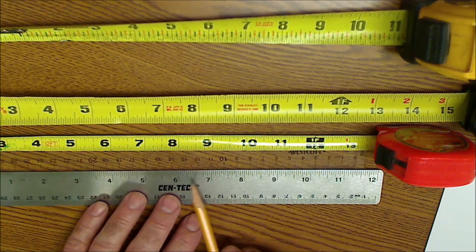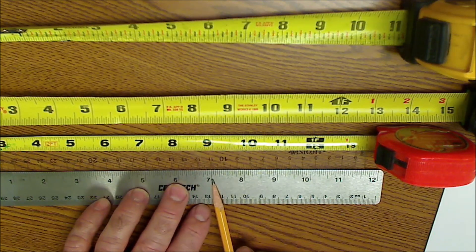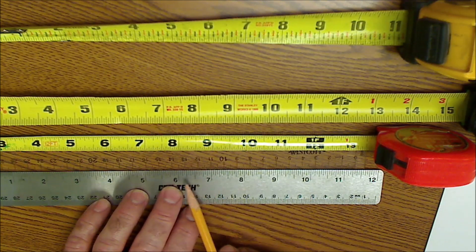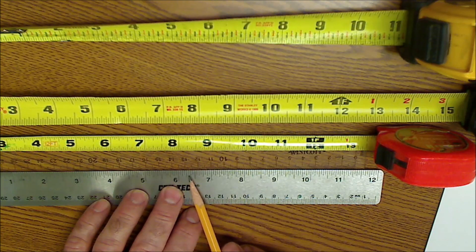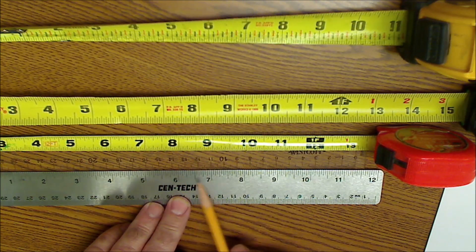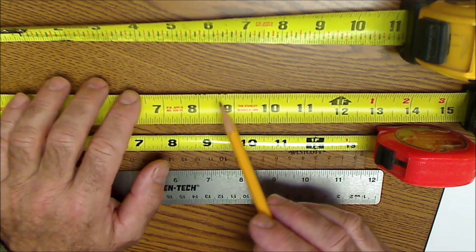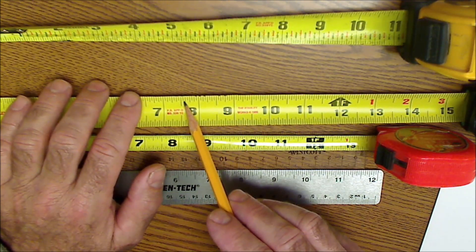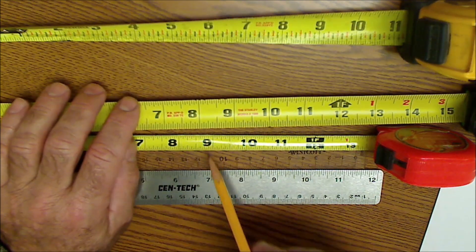So step one is really to count how many lines are in a single inch and figure out what your units are. So one, two, three, four, five, six, seven, eight and a half inch. So every unit here is the sixteenth inch. It doesn't matter what tape you're looking at, you're also looking at the length of the lines. It's kind of the same in all of them.